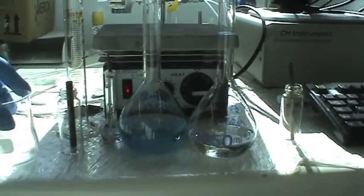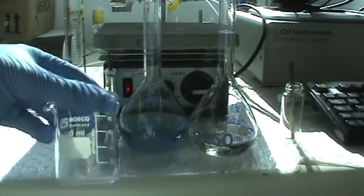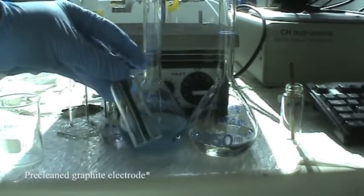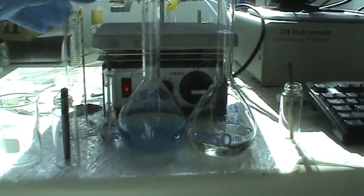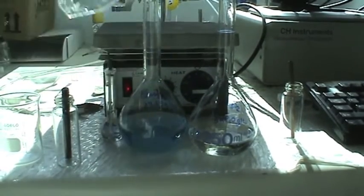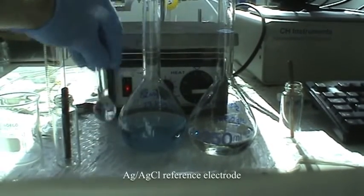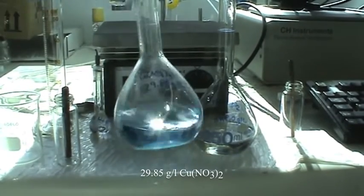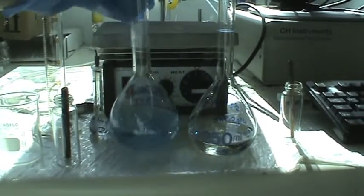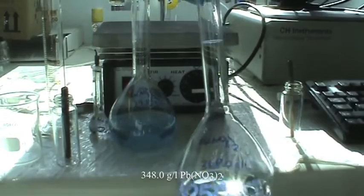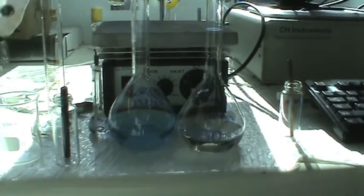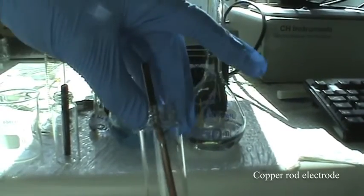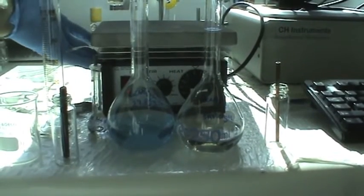To start, get a 100ml beaker, a pre-cleaned graphite working electrode, a measuring cylinder, a silver-silver chloride reference electrode, a 29.85g per litre copper nitrate solution, a 348g per litre lead nitrate solution, a copper rod counter electrode, and a heating mantle.